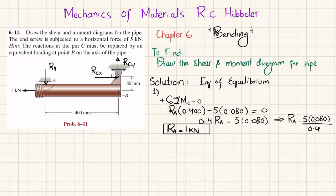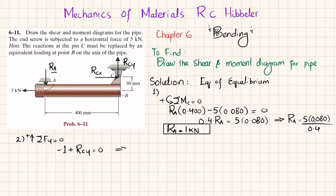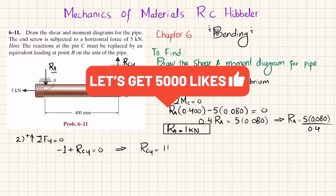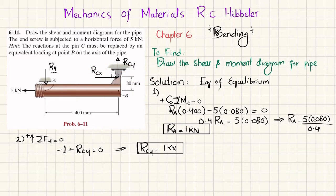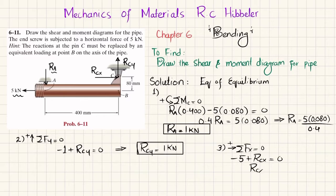Applying the second equation of equilibrium — sum of forces along the y-direction equals zero, upward positive — R_A is downward so minus 1, plus R_CY upward, equals zero, giving R_CY = 1 kilonewton. For the x-direction: sum of forces equals zero, so minus 5 plus R_CX = 0, giving R_CX = 5 kilonewton.